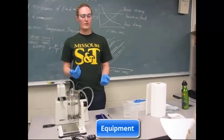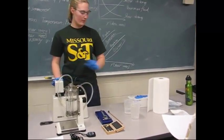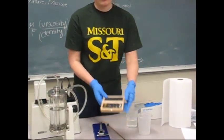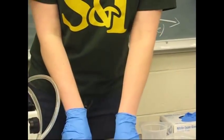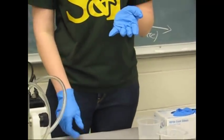The equipment required for this is going to be water, the falling ball viscometer, a circulator, a beaker or flask, the falling balls, a plunger, the caliper, and then gloves like I have on.